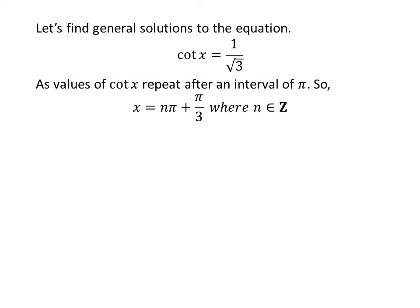Let us find the general solutions. As we know the values of cotangent of x repeat after the interval of pi, so the general solutions are n times pi plus pi upon 3 where n is an integer.